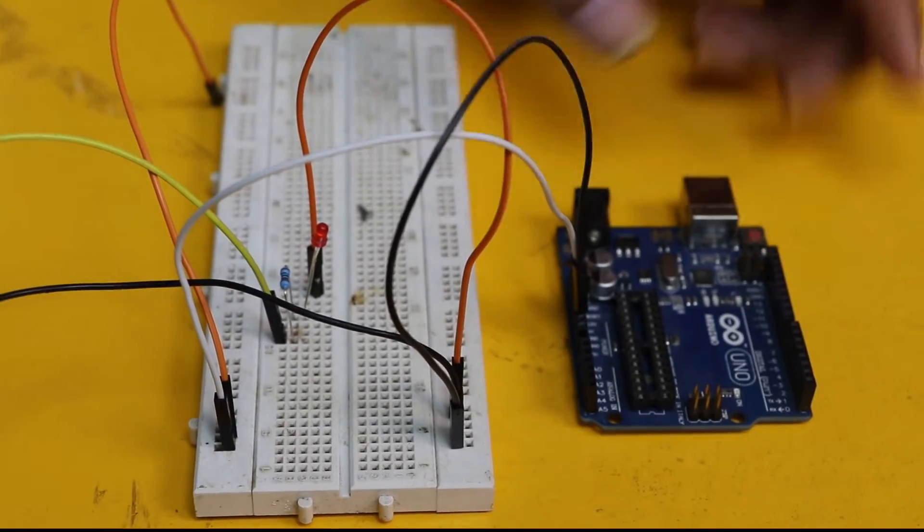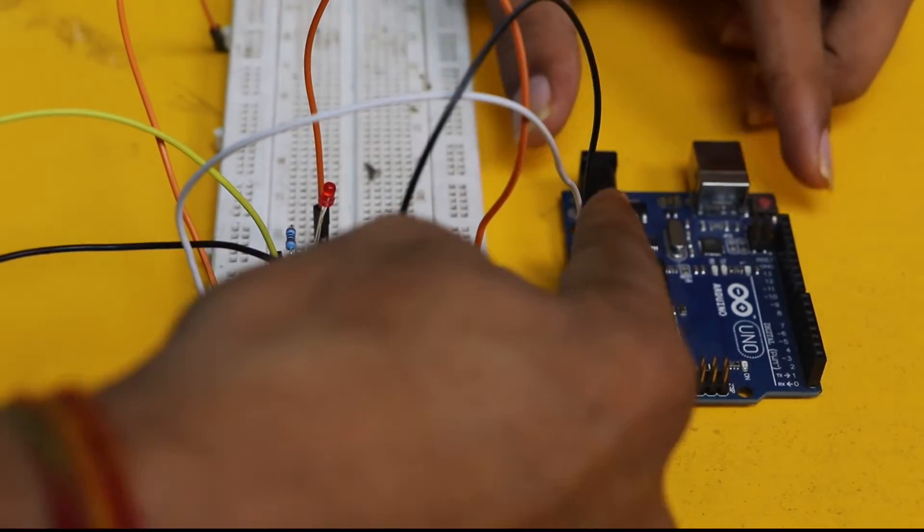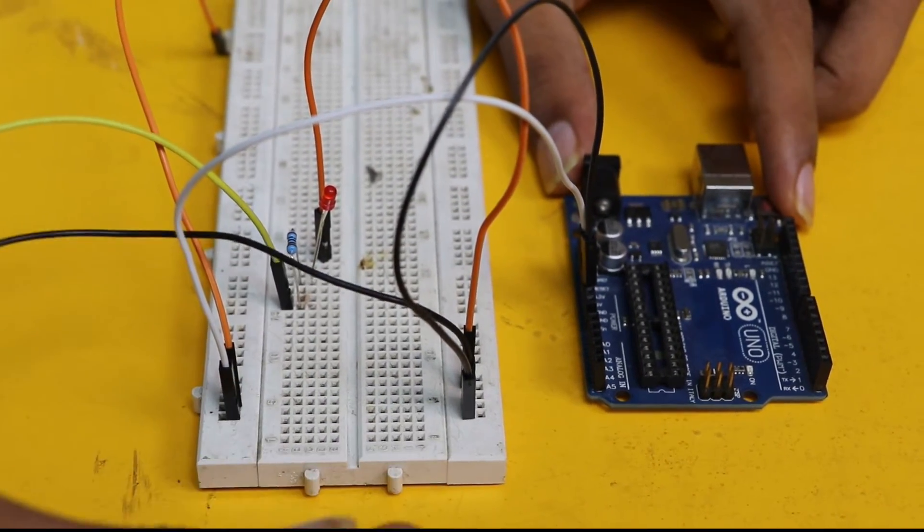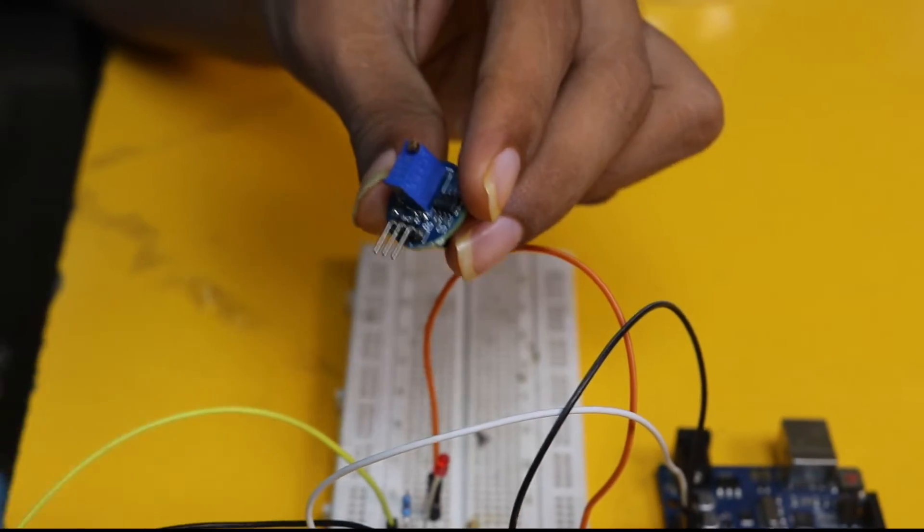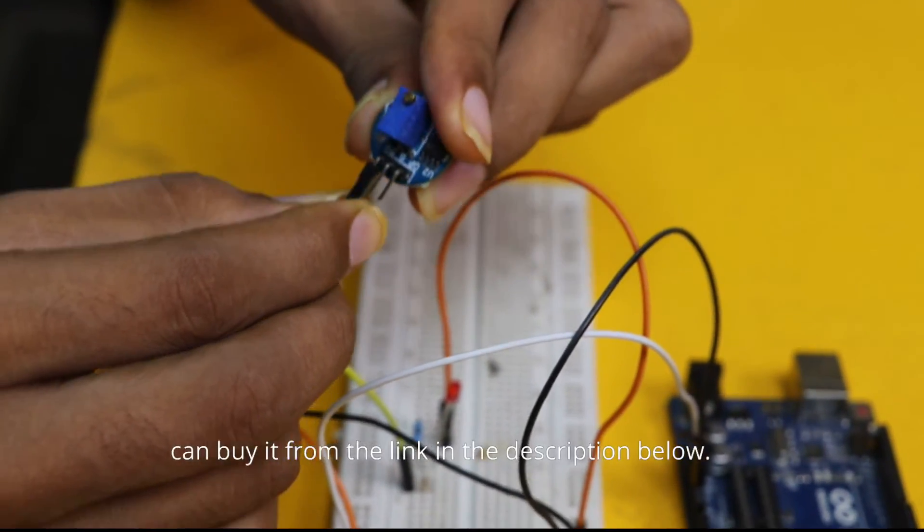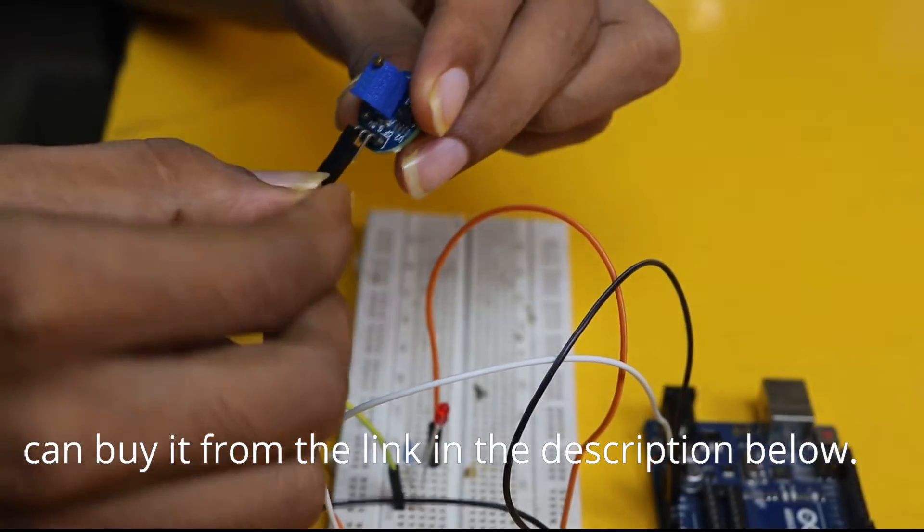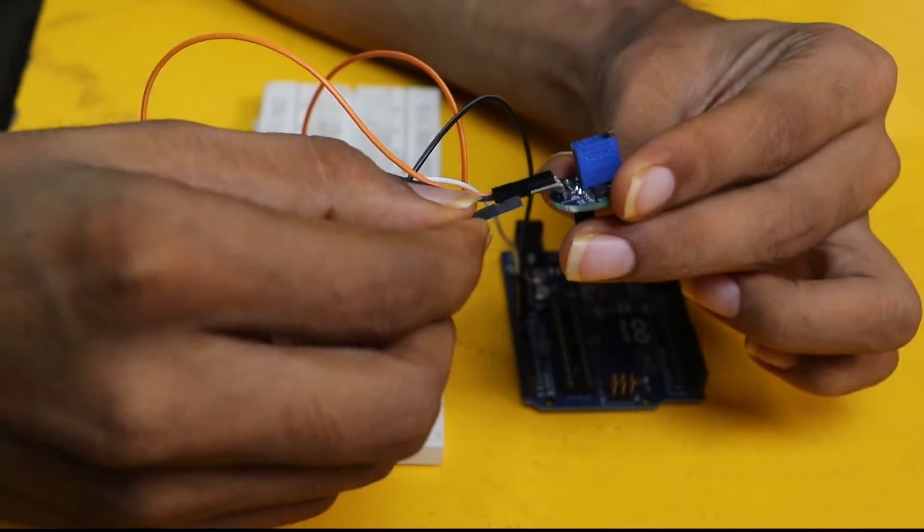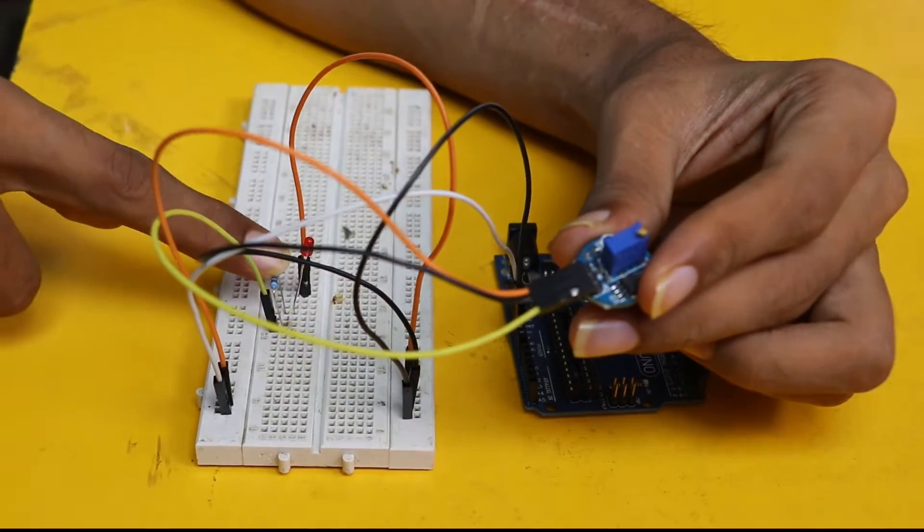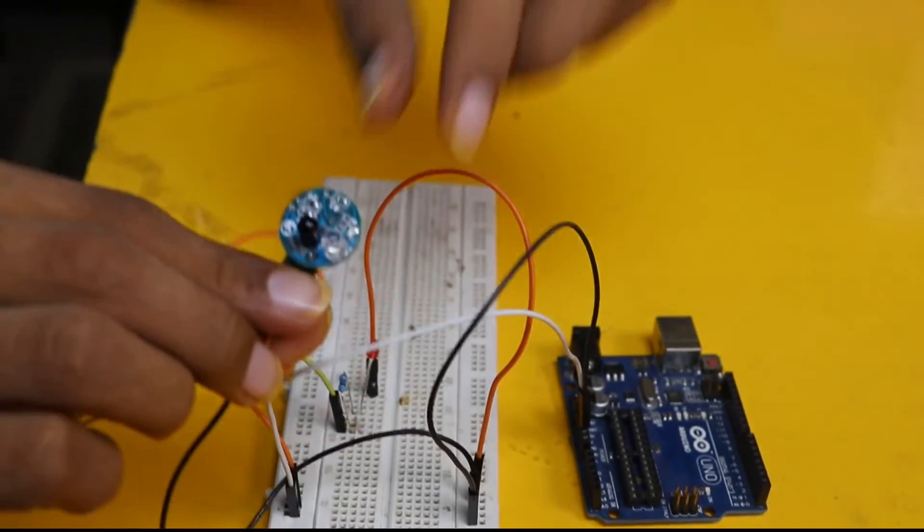This is Arduino, breadboard, some cables, one LED and resistance to show you the simple working. From Arduino we will get two wires - one for VCC and another for ground. The first pin is VCC, second pin is ground, and third pin is output. The output we will connect to the resistance, then to the LED, and the LED second end is connected to ground.